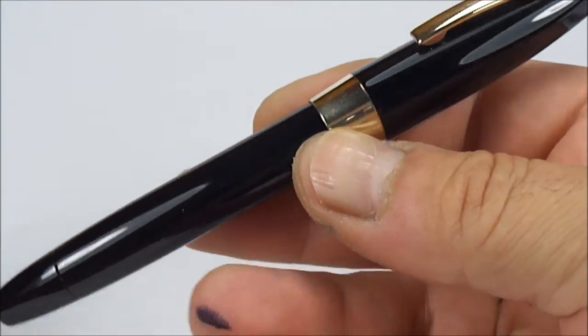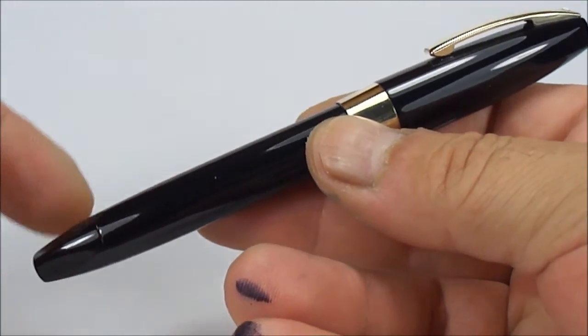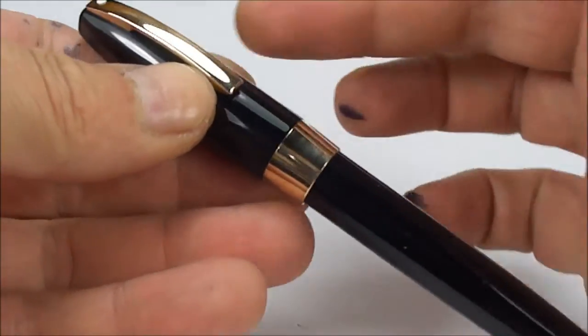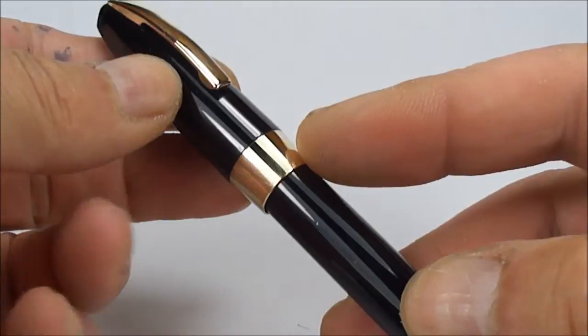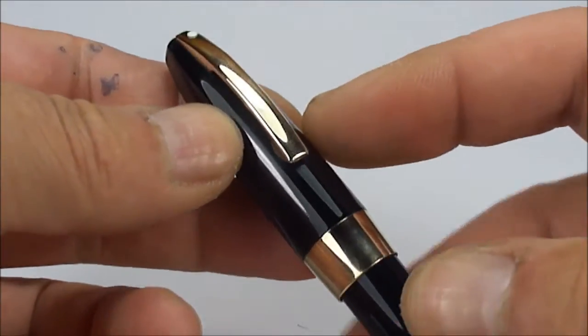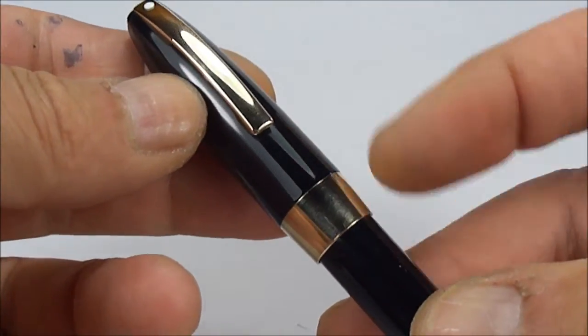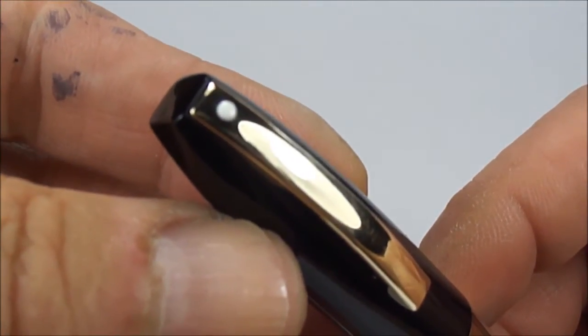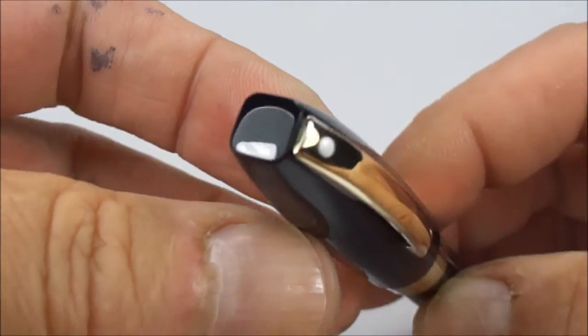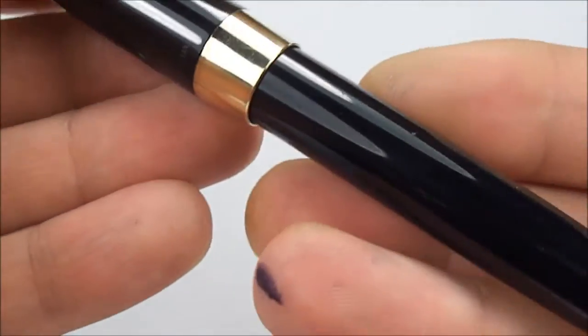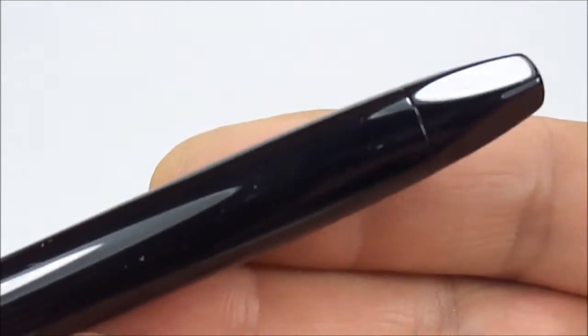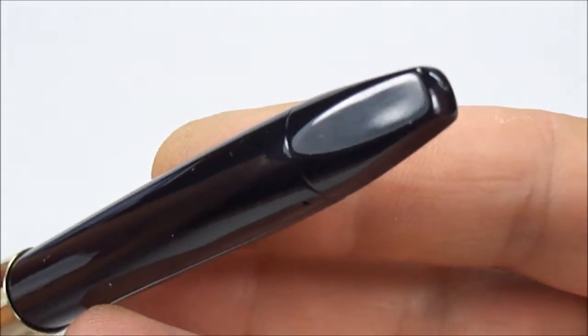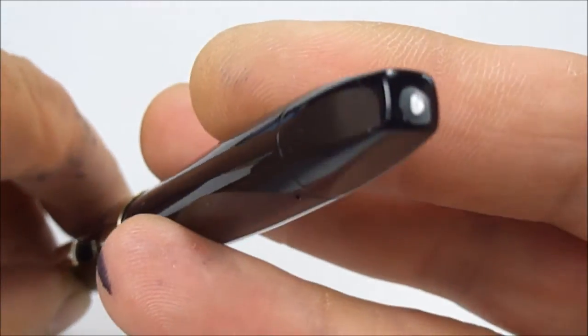But there we have it an absolutely stunning example of a Schaefer PFM Mark III in classic black plastic. A large gold filled clip with a gold filled cap band with a gold filled clip to the top there with the white dot. Now let's just give you a couple more twirls. I'm absolutely really delighted with the condition of this particular pen. It's absolutely beautiful.